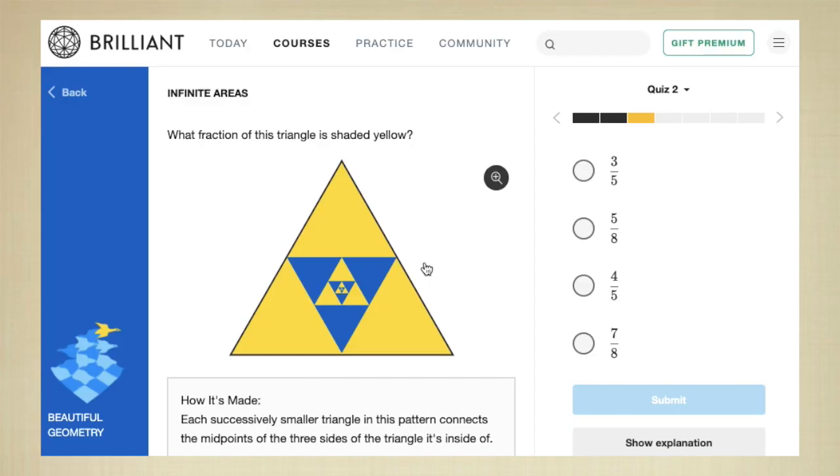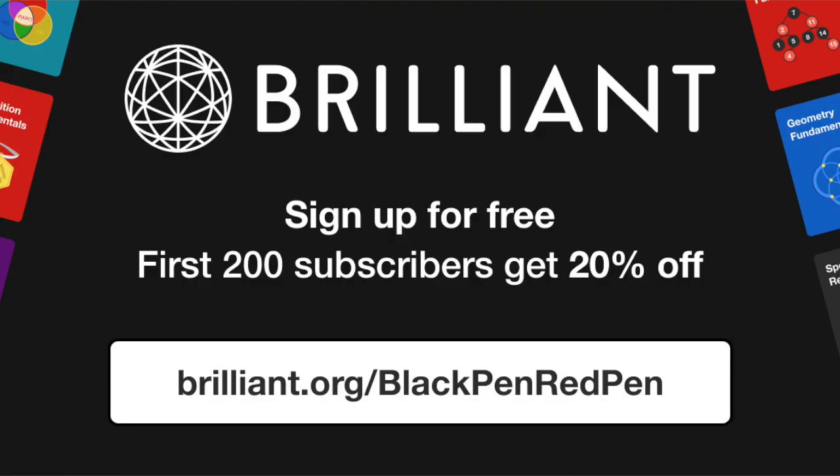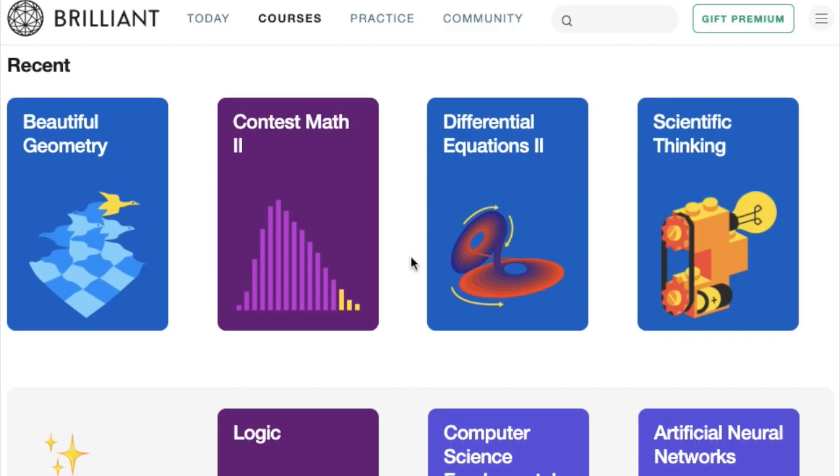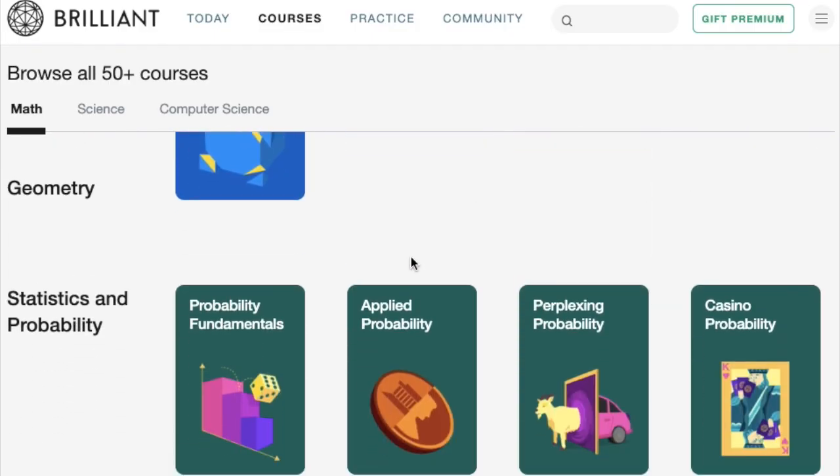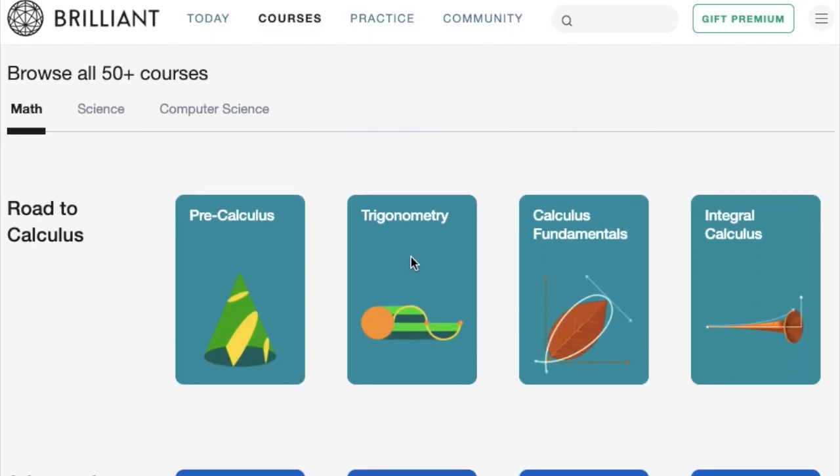They will entertain you, and you guys will be really having fun as well. If you guys would like more, you guys can use the link brilliant.org/BlackPenRedPen because this way you can get a 20% discount to their annual premium subscription. That way you get the access to all of their courses. Thank you guys so much for watching. Thank you guys for checking out Brilliant.